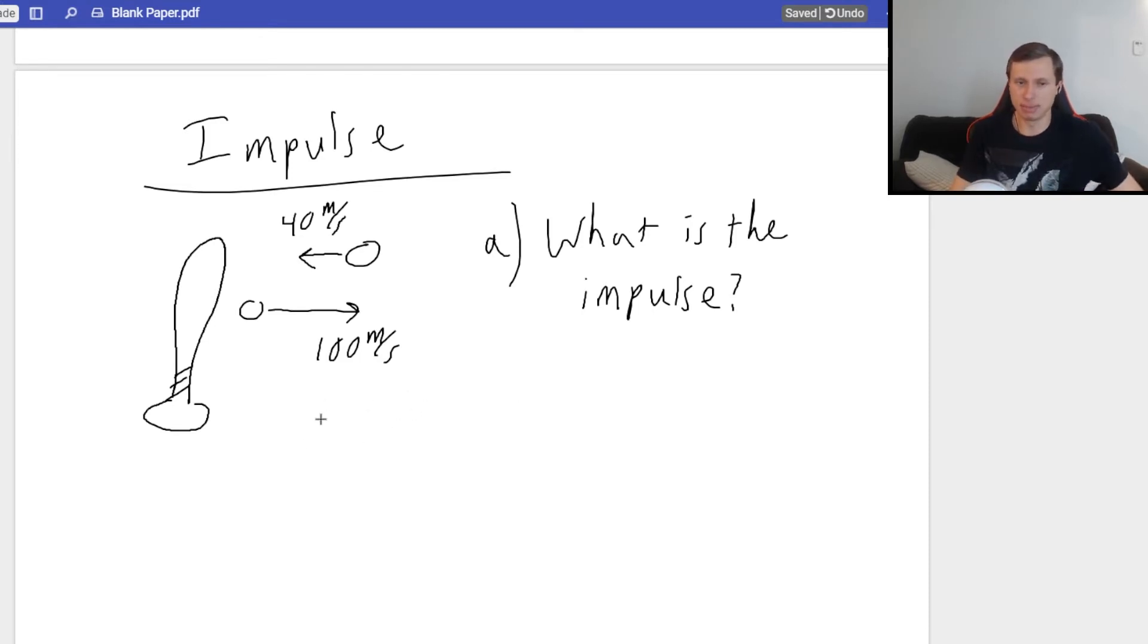Whoops, I forgot to give the mass of the baseball. Mass equals, let's say, 0.2 kilograms, and again that's for the baseball. How do I know this is an impulse problem besides the fact that I told you? Any ideas?